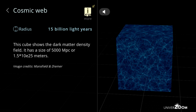Cosmic web, radius: 15 billion light years. This cube shows the dark matter density field. It has a size of 5000 MPC or 1.5 times 10 to the 25 meters.